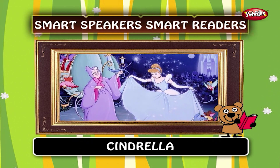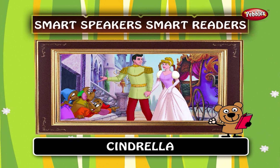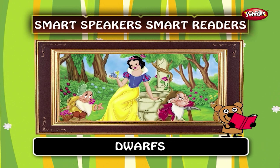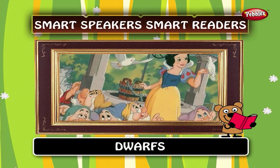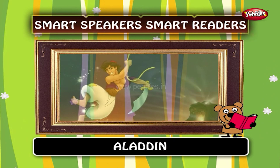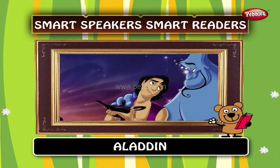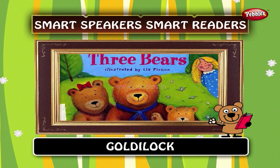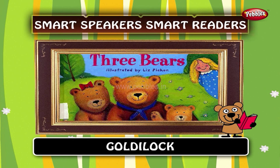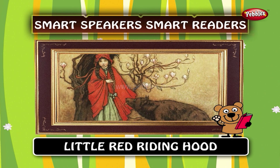Cinderella: a girl who was badly treated by her stepmother and stepsisters. Dwarfs: the seven characters whom Snow White meets in the jungle. Aladdin: the boy who got the magic lamp. Goldilocks: the girl who met three bears. Little Red Riding Hood: the little girl who met a cunning fox.